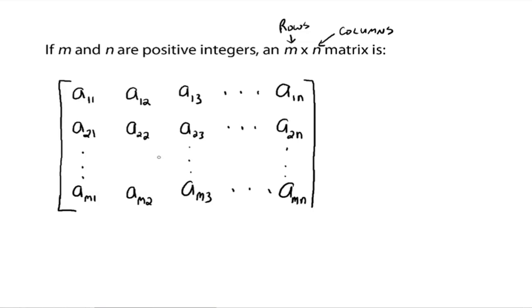That looks pretty scary. But what all these A's are - they're called entries. These are all going to be numbers and variables at some point, but they're essentially numbers inside here. We refer to those as entries.